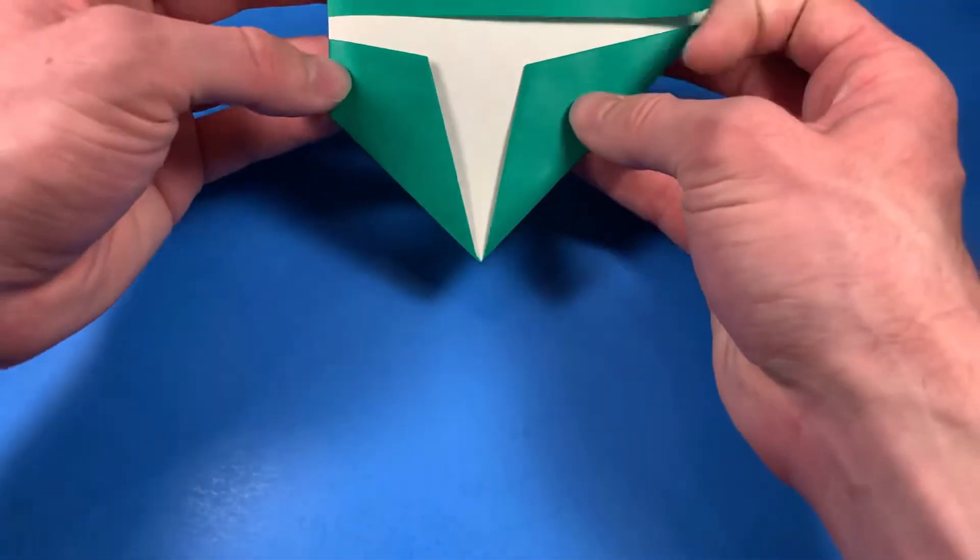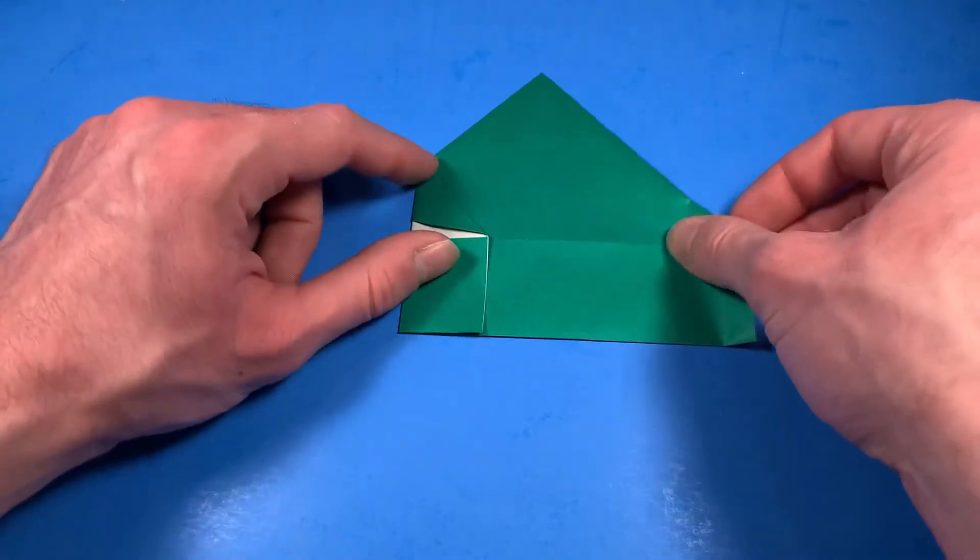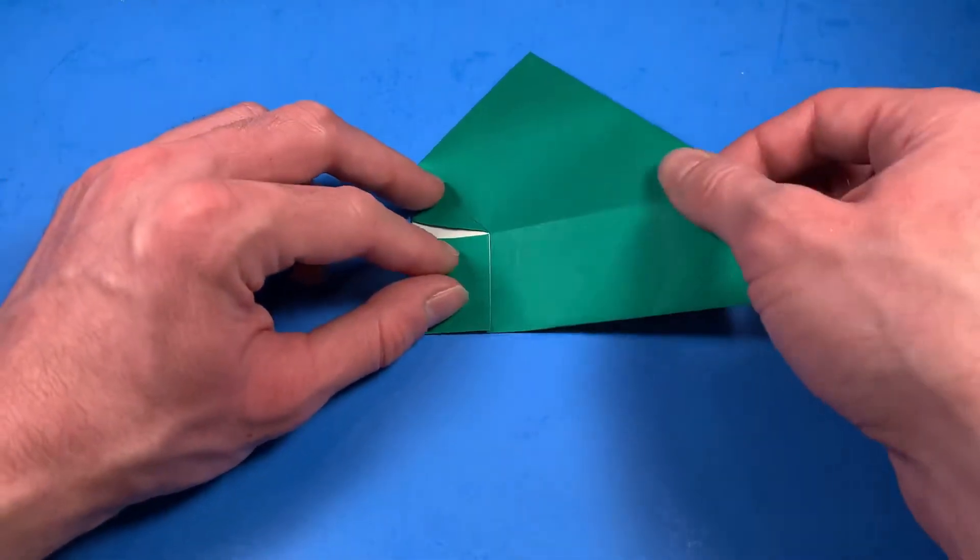So once we have it to taste, we're going to crease. And if you want, you can turn it over just to see how it looks. I think that looks okay. So now let's flip it over and we still have our house. It's just kind of a little narrower on one side.